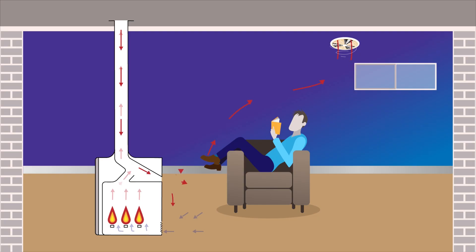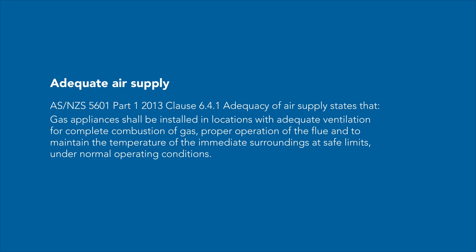This video explains what negative pressure is and its effect on gas appliances. AS NZS 5601 Part 1 2013 Clause 6.4.1 Adequacy of air supply states that gas appliances shall be installed in locations with adequate ventilation for complete combustion of gas, proper operation of the flue, and to maintain the temperature of the immediate surroundings at safe limits under normal operating conditions.